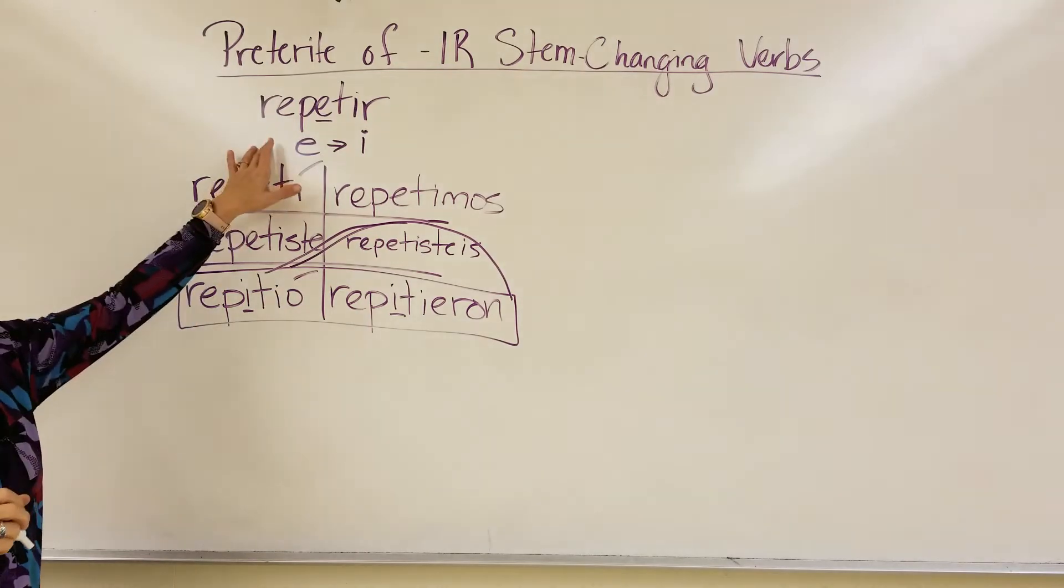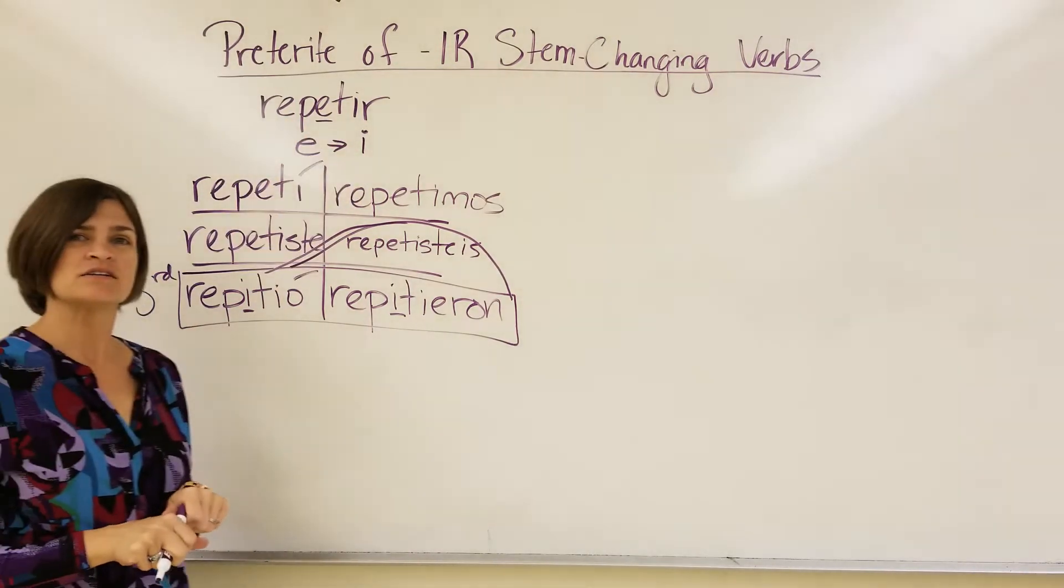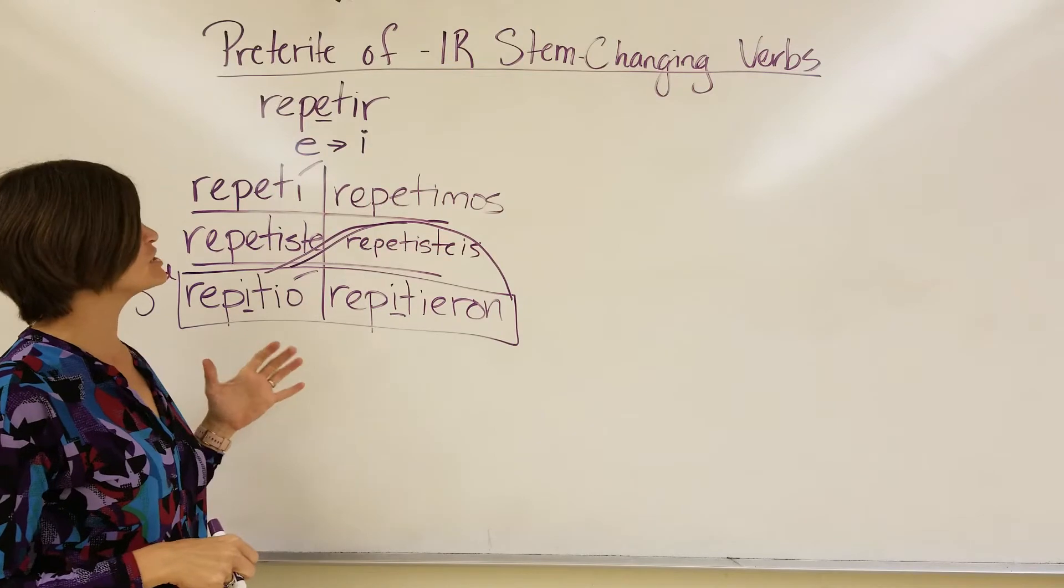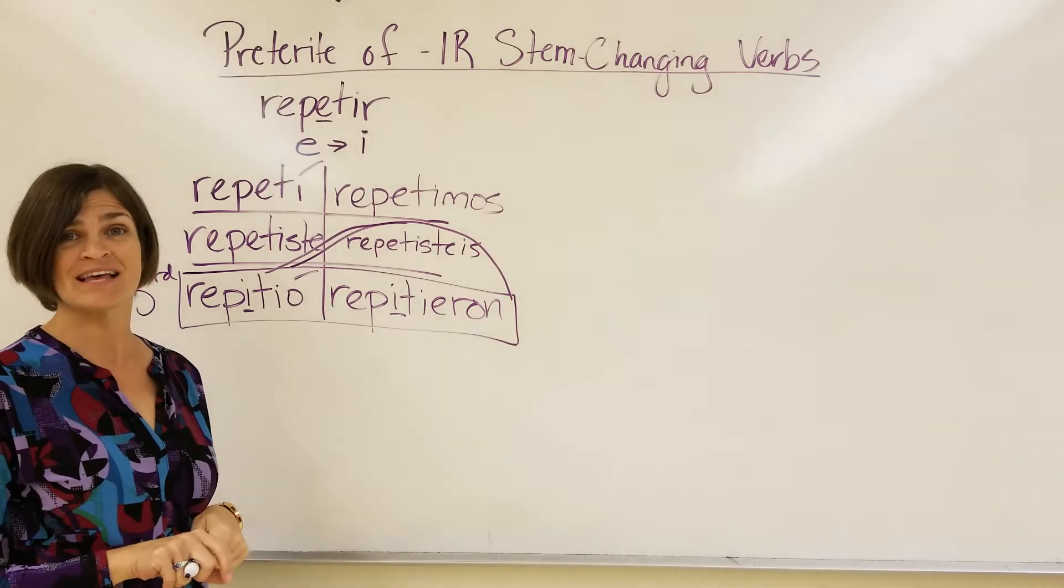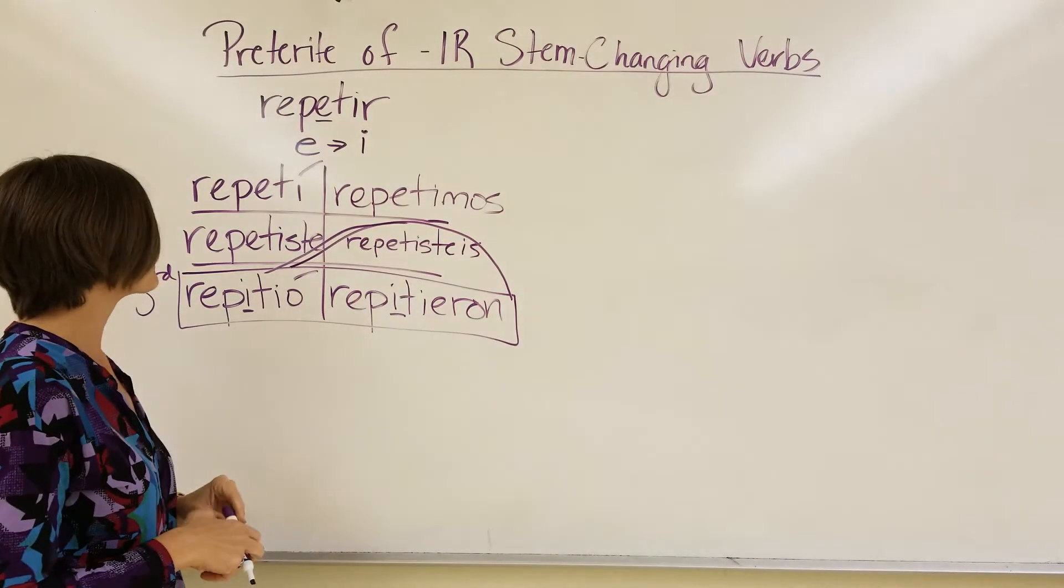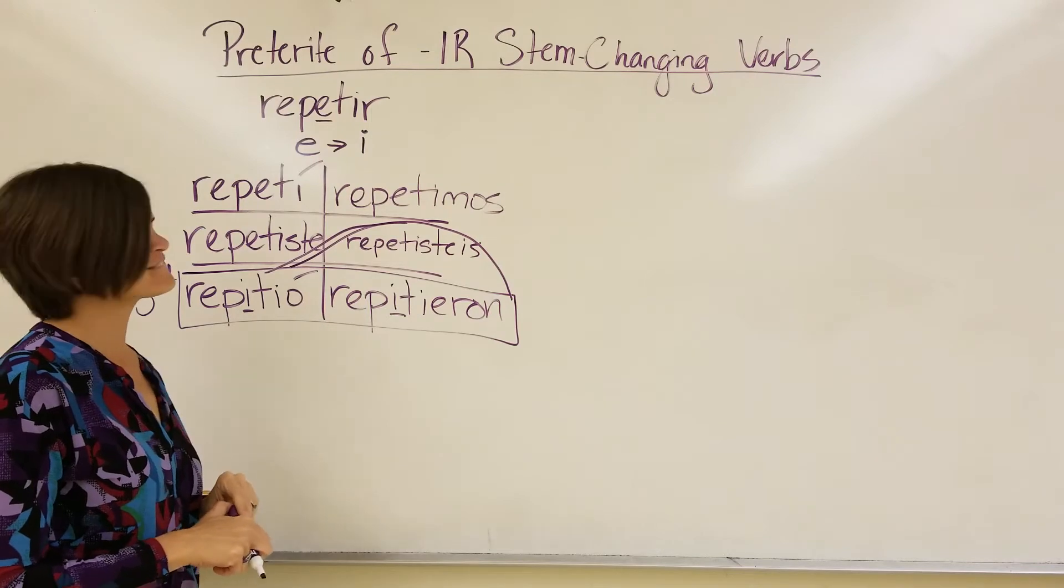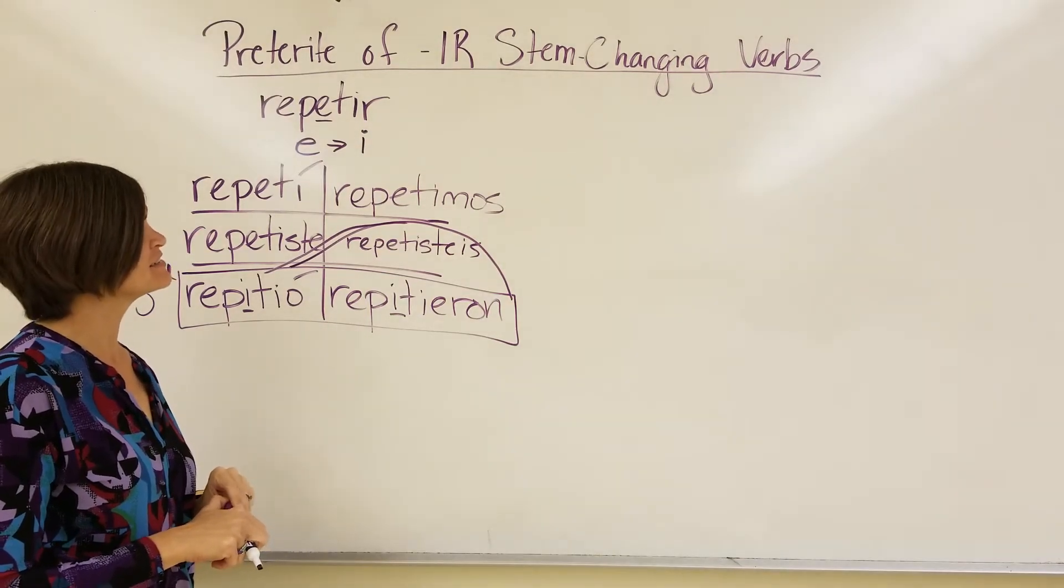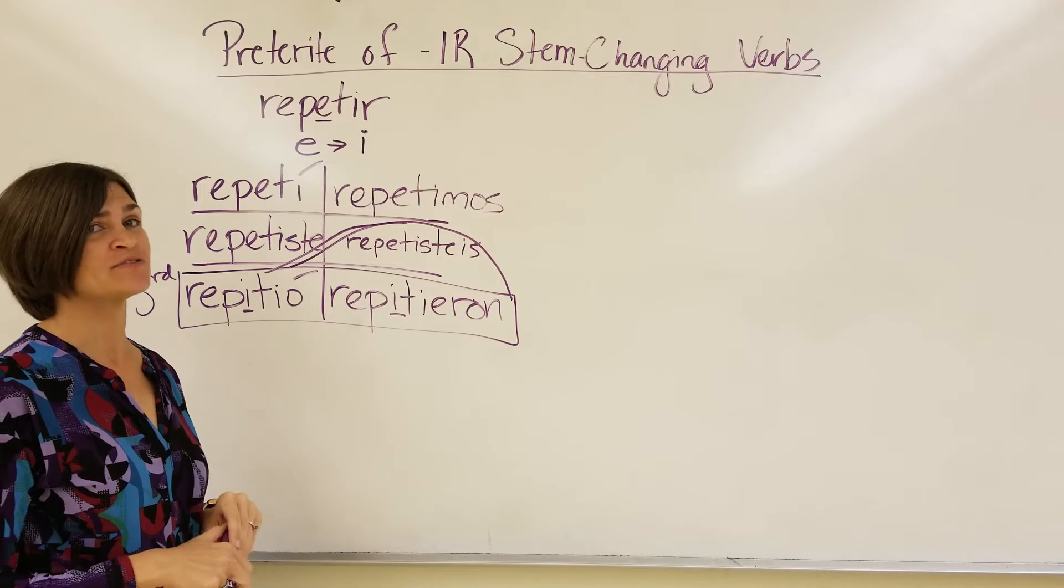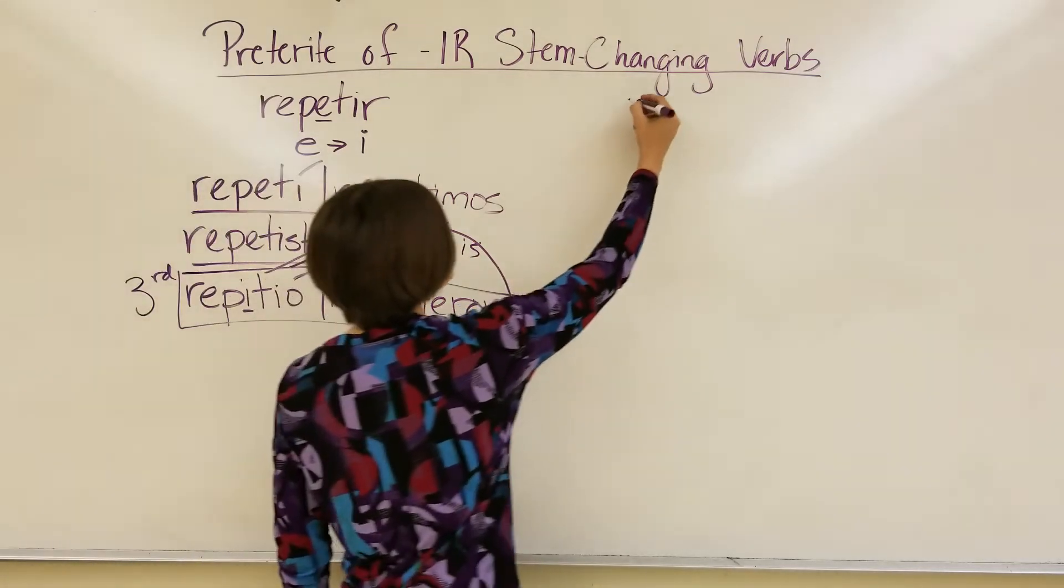So, that's an E changing to an I. So, even verbs that didn't change from E to I in the present tense, well, I can't think of an example right now. So, I'll come back to that.